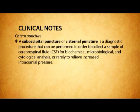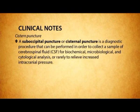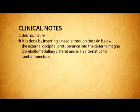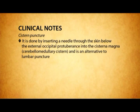Another clinical application of the subarachnoid space is cisterna puncture. A suboccipital puncture is a diagnostic procedure that can be performed to collect a sample of cerebrospinal fluid for biochemical, microbiological, and cytological analysis, or to relieve increased intracranial pressure. It is done by inserting a needle through the skin below the external occipital protuberance into the cisterna magna, or cerebellomedullary cistern, and it is an alternative to lumbar puncture.